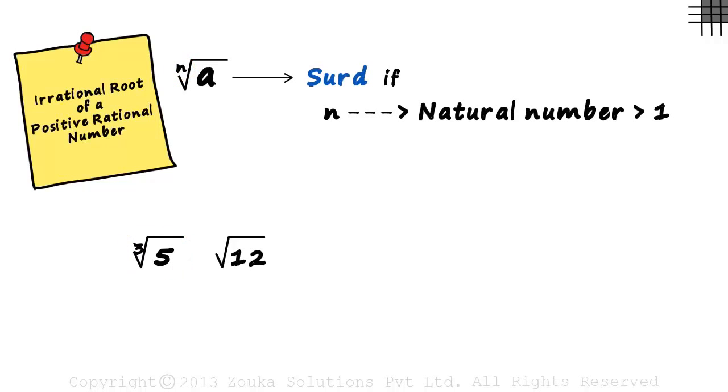Here as we can see the order is 3 and square root means the order is 2. The second condition says that a has to be positive rational number. 5 and 12 are positive and rational.